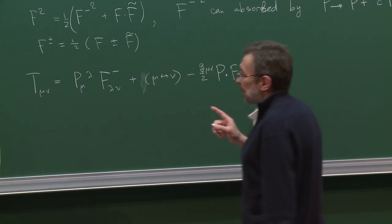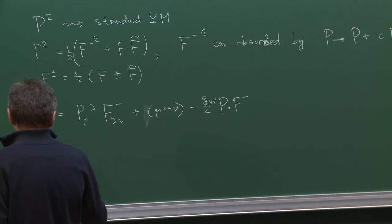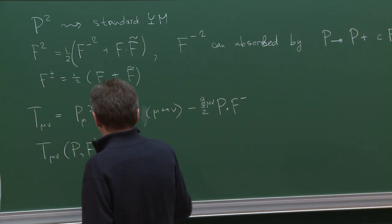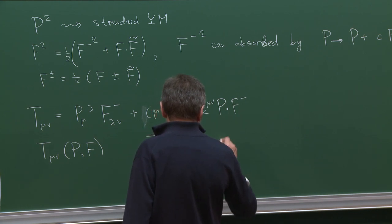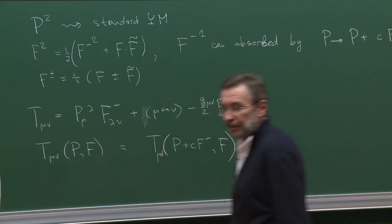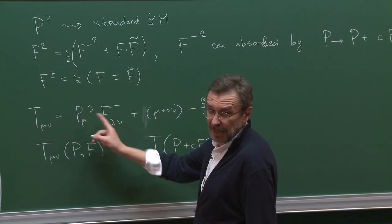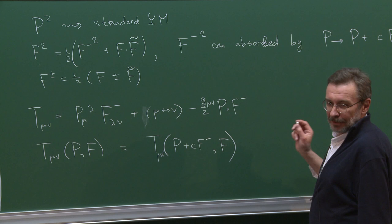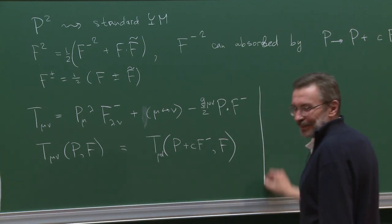Notice that if we apply a field redefinition — writing T_μν as a function of P and F, then considering a shifted P — it is easy to see that nothing changes, because when P equals F_minus, the expression is zero. This leads to a puzzle for the interested listener, which I give as a birthday present — that was my promise.